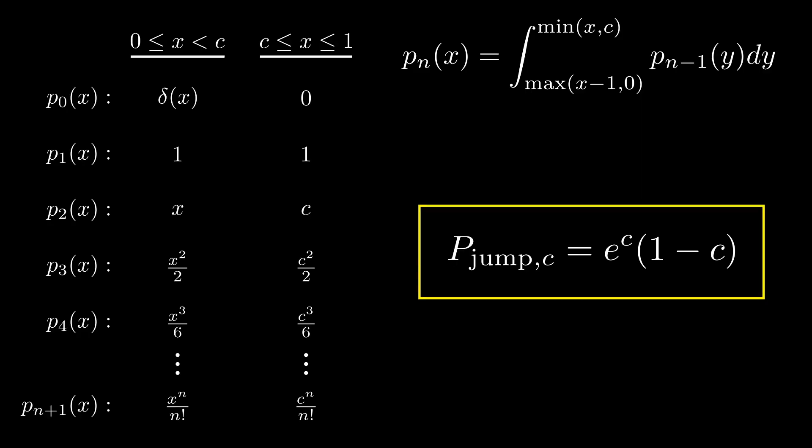As a sanity check, we see that if our cutoff is zero, then we always jump, and our probability of jumping is one. On the flip side, if our cutoff is one, then we never jump and retrieve a probability of zero.